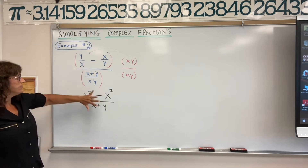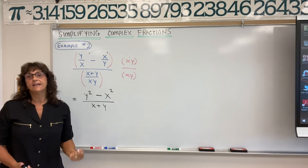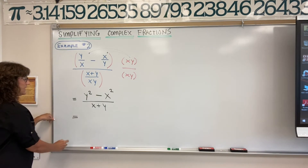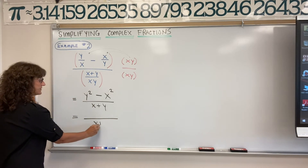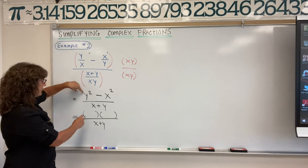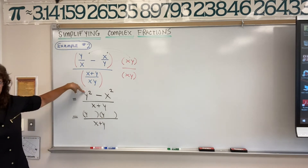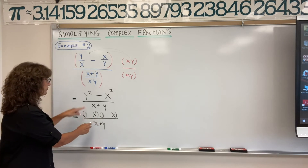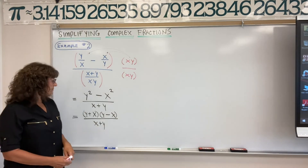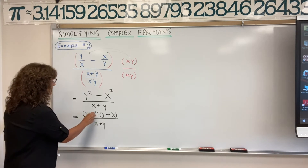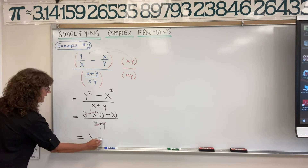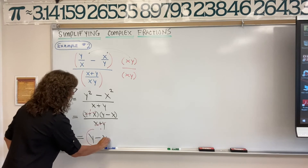We took our complex fraction and simplified it in one step. We can go further because the numerator factors — it's the difference of two perfect squares. The denominator doesn't factor, but the numerator factors into y squared minus x squared equals (y plus x)(y minus x). Since addition is commutative, y plus x and x plus y are the same, so those factors cancel. The final answer for this complex fraction is y minus x.